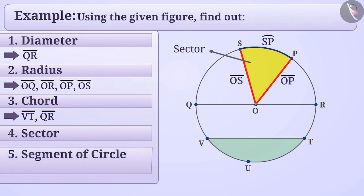Segment of circle is the part of a circle formed by a chord and corresponding arc of the circle. In a given circle, the part formed by chord VT and arc VT is a segment.